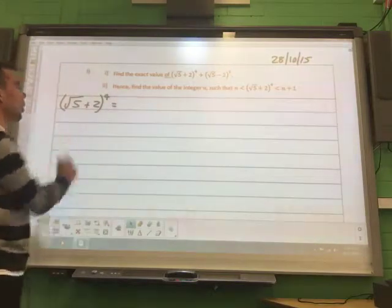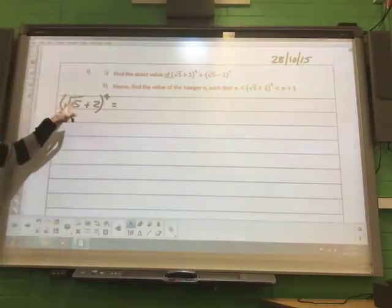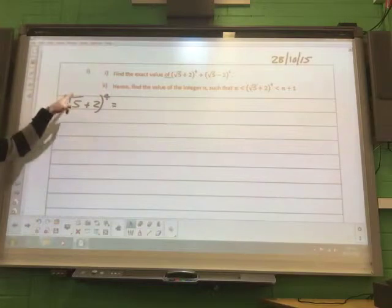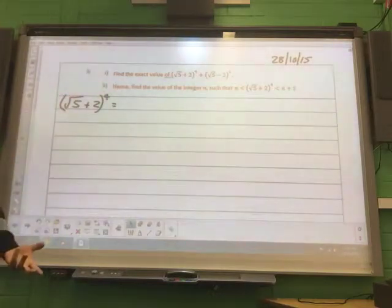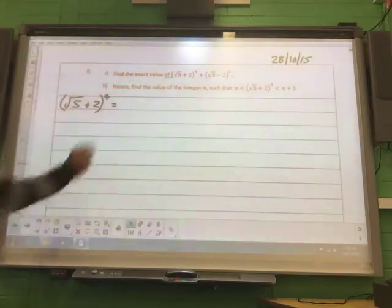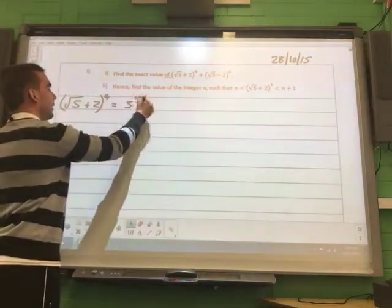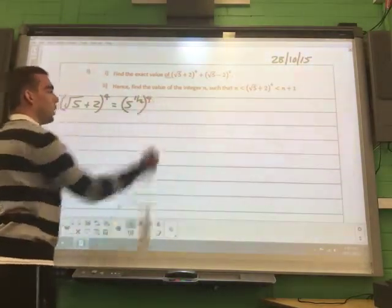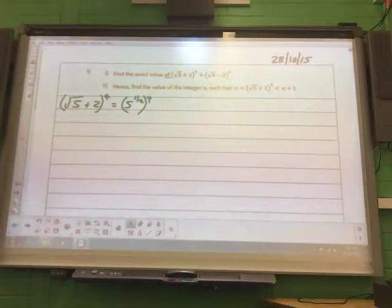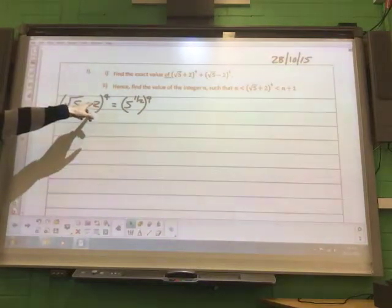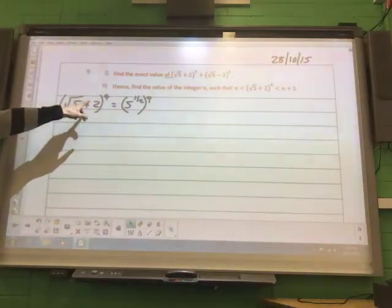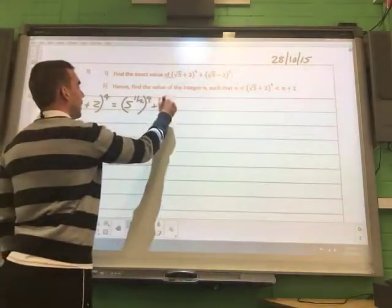So we have 1 times this first term to the highest power. Now I'm going to write the root as a fraction index. So the root 5 becomes 5 to the half. Okay, and applied to the highest power. And then this second term is to the power of the lowest power, which is going to be 0.